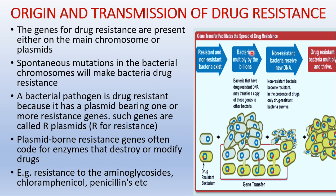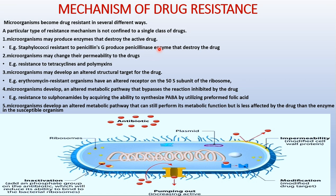Microorganisms develop resistance in several different ways. A particular resistance mechanism is not confined to a single class of drugs — two organisms may use different resistance mechanisms towards the same chemotherapeutic agents. Resistant mutants arise spontaneously and are then selected; these mutants are not created by exposure to a drug.